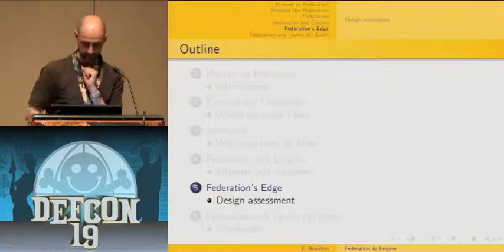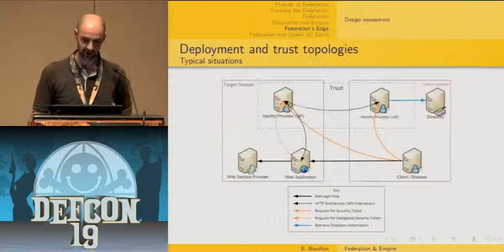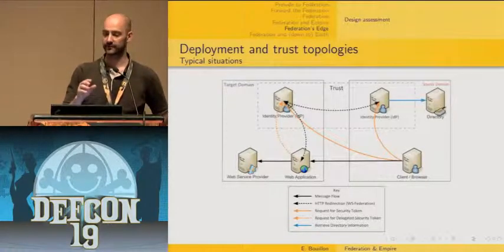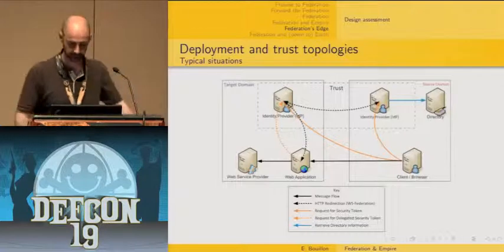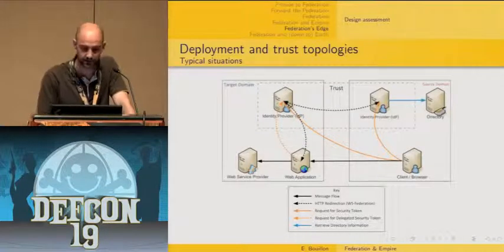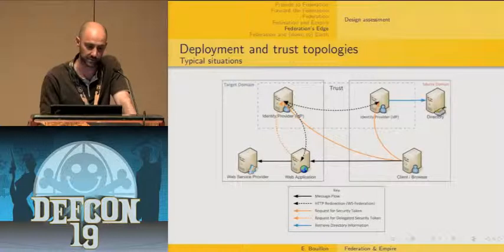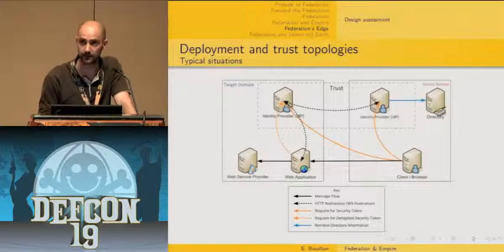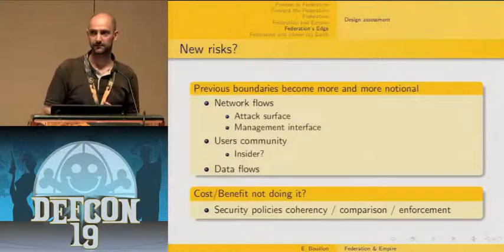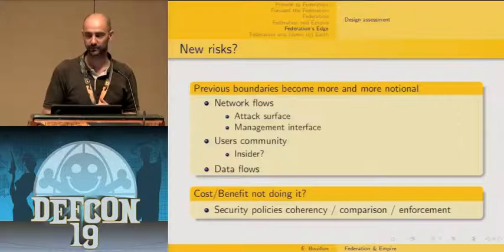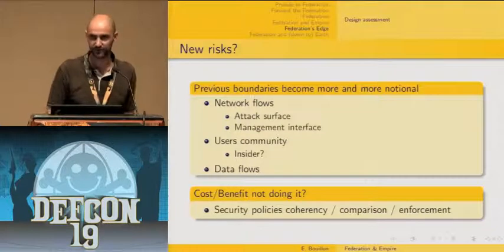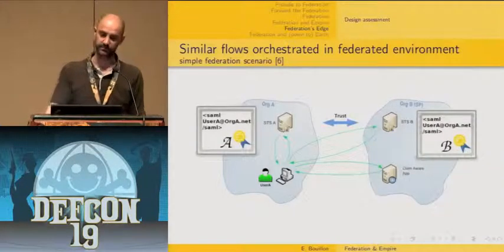The last part covers considerations regarding deployment and trust topologies. In the simplest case you have two organizations with a trust relationship. But there are more complex, more realistic scenarios. The question is: does this kind of deployment really introduce new risk? Contentiously, other solutions are not much more secure. Here is a simple deployment scenario: one organization accesses another organization's application with access control based on, say, the user's email address, and organization B has several customers accessing its application.